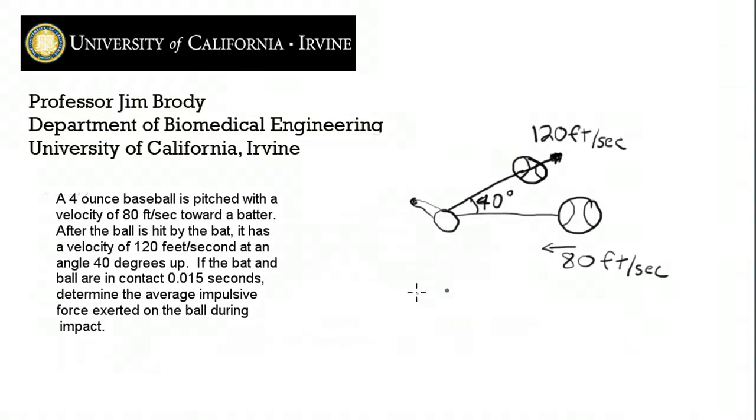I've sketched out the problem here. So we've got the ball that's initially thrown at 80 feet per second. Here's the bat. And after the ball hits the bat, it flies off at 120 feet per second at an angle of 40 degrees up.